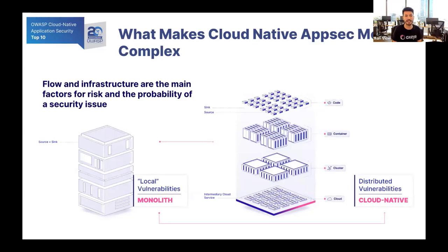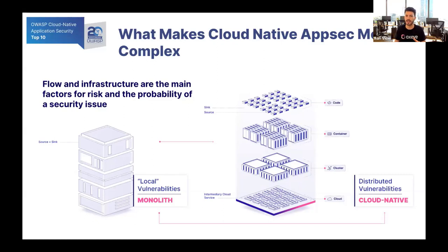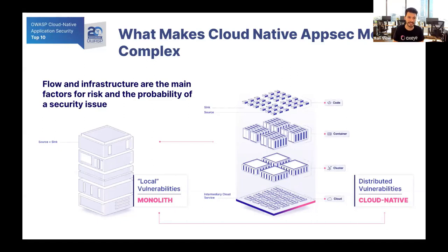Nowadays, the application is built from many different components in a microservice architecture, and each one can be written in a different language and stored in a separate code base repository. These microservices are installed on containers managed by orchestration platforms such as Kubernetes and deployed in the cloud, which can be a public cloud like AWS, GCP, and Microsoft Azure, but it also can be a private on-prem cloud. This new approach didn't just change how the application works, but also the way risks are managed.